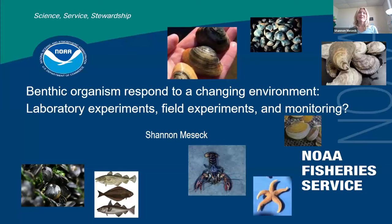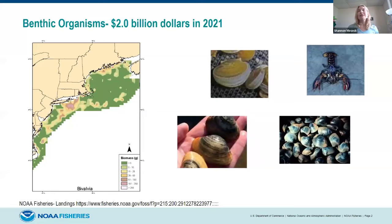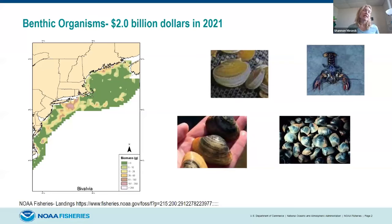I'm really excited to present my take on benthic organisms — how they respond to changing climate, moving from laboratory experiments to field experiments and monitoring, and how they all relate to each other moving forward within the NECAN region. Benthic organisms represent the largest economic fisheries in the northeast, about two billion dollars, with lobster and sea scallops making up about 75 percent of the revenue. When you include other bivalves, you're close to 80 to 85 percent of the revenue depending on the year.